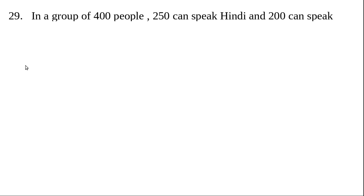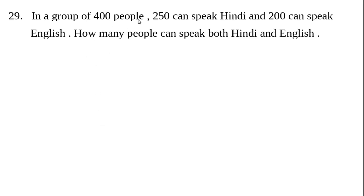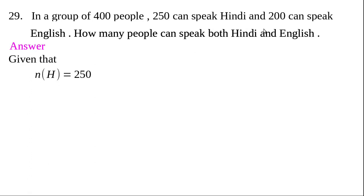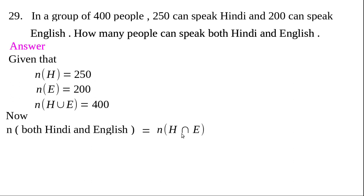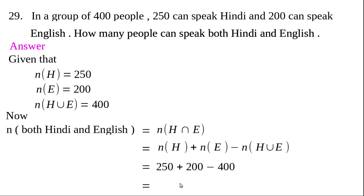Question 29: In a group of 400 people, 250 can speak Hindi and 200 can speak English. Find the number who speak both. Convert to sets: n(H) = 250, n(E) = 200, n(H∪E) = 400. We want n(H∩E). Using the formula n(H∩E) = n(H) + n(E) - n(H∪E), replace the numbers and the answer is 50. Therefore, 50 people speak both Hindi and English.